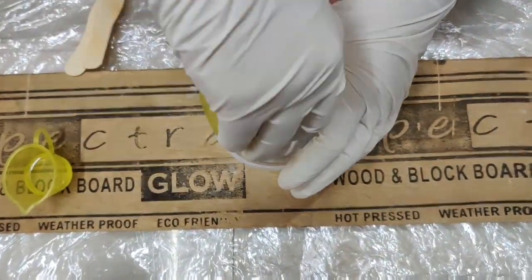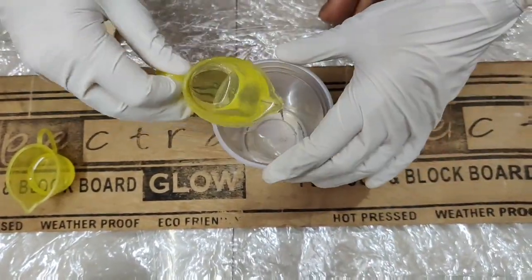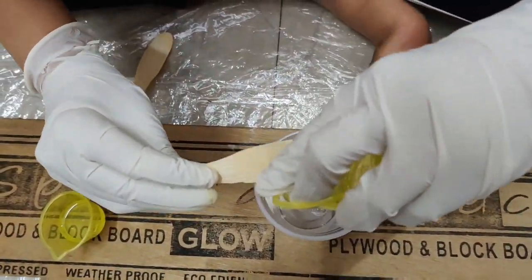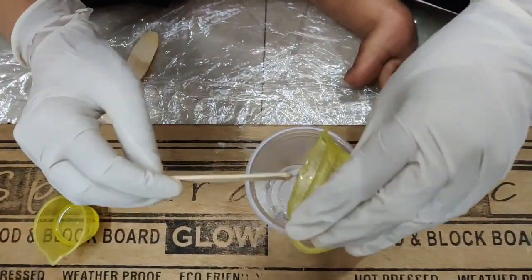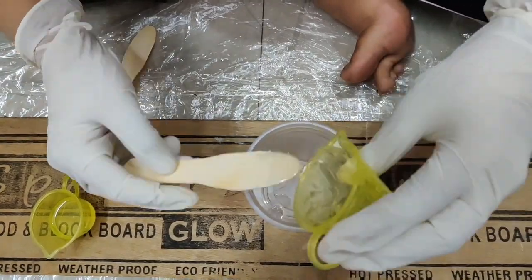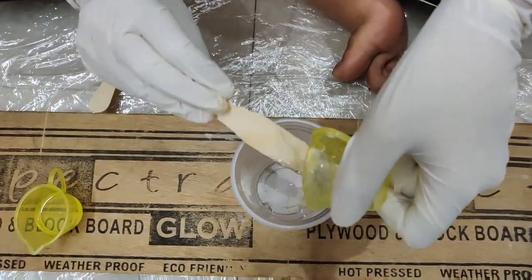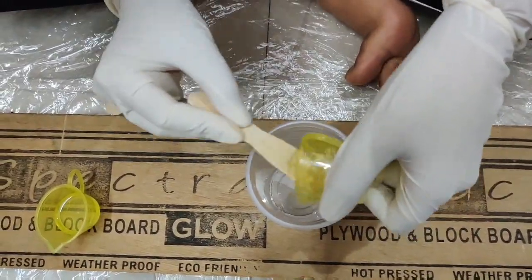Put the resin in the container and use the ice cream stick to get every drop of it. Mixing appropriate is very important, otherwise your resin can be sticky. It will not harden properly. So the ratio should be appropriate and the mixing should be proper.